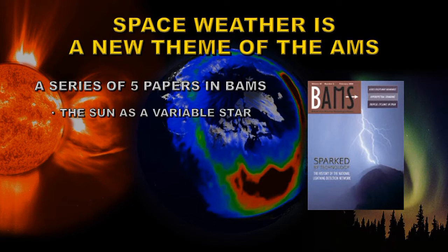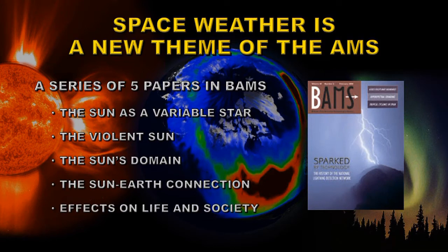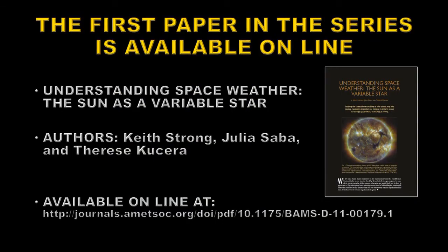The first paper is called 'The Sun as a Variable Star,' the second 'The Violent Sun,' the third 'The Sun's Domain,' the fourth 'The Sun-Earth Connection,' and the fifth 'Effects on Life and Society.' The first one has already been published and is available online. The other two have been accepted for publication and should be published very shortly.